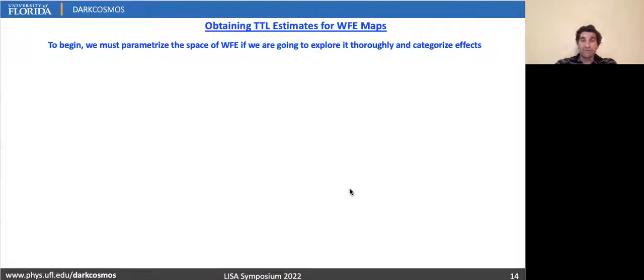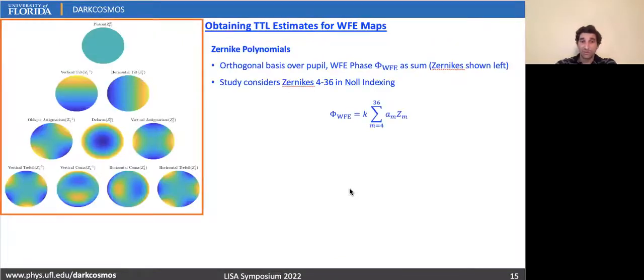Of course, to begin with, we need a way of parameterizing our space, and so Zernike polynomials are ideal as they're orthogonal over the telescope exit aperture. We go through 4 through 36 here in the Noll indexing scheme, but we can readily adapt our methods to include all of them. And we write the phase as this sum here where these are actually scaled so that the a_m here corresponds to the actual RMS height of that Zernike's contribution to the wavefront error.